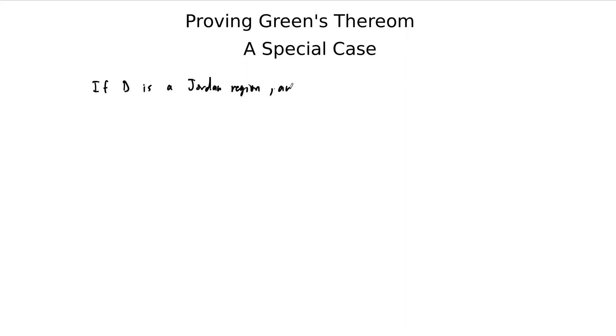Before we continue to examples, I'd like to prove a special case of Green's Theorem. Remember, Green's Theorem tells us that if D is a very nice region — a Jordan region — and F is a vector field in two-dimensional space, so if F equals PQ is a vector field such that the first partials are continuous on D, then we get a really nice theorem.